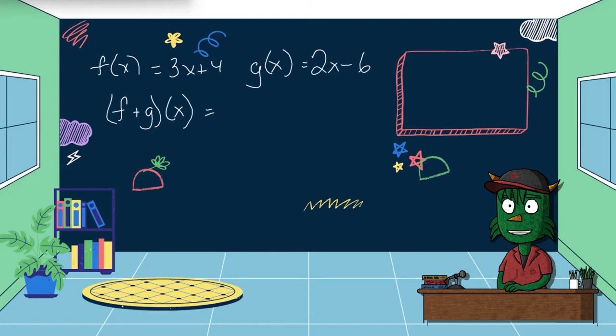So I have f(x) is 3x plus 4 and g(x) is 2x minus 6. So I have f plus g of x. So just like before, that's f(x) plus g(x). And just like before, I'm going to replace it with what they are. So I have 3x plus 4 plus 2x minus 6.